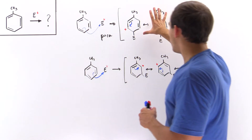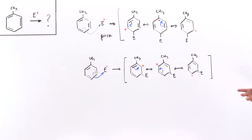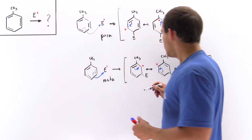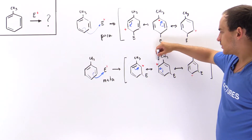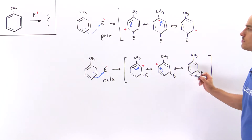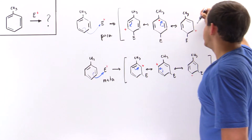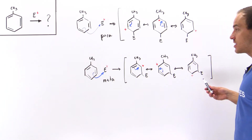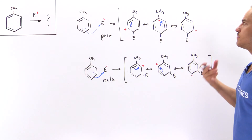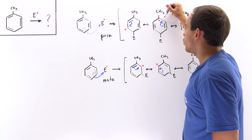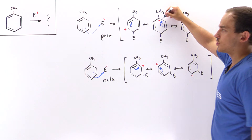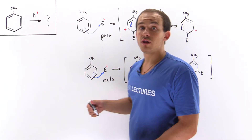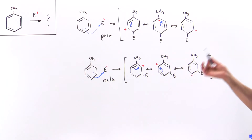The question is which set of structures is more stable. For the meta substitution, we have a secondary carbocation, a secondary carbocation, and a secondary carbocation — all three are secondary. For the para substitution, we have a secondary, a tertiary, and a secondary carbocation. The one that contains the tertiary carbocation will be more stabilizing, so the ortho-para product will predominate for this monosubstituted benzene.